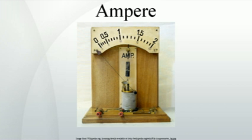Rather than a definition in terms of the force between two current-carrying wires, it has been proposed to define the ampere in terms of the rate of flow of elementary charges. Since a Coulomb is approximately equal to 6.2415093×10¹⁸ elementary charges, such as electrons, one ampere is approximately equivalent to 6.2415093×10¹⁸ elementary charges moving past a boundary in one second, or the reciprocal of the value of the elementary charge in Coulombs. The proposed change would define 1 A as the current in the direction of flow of a particular number of elementary charges per second.